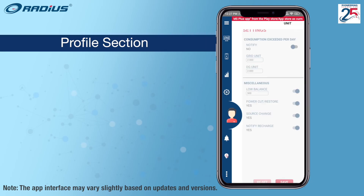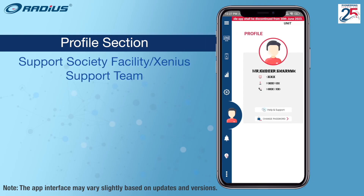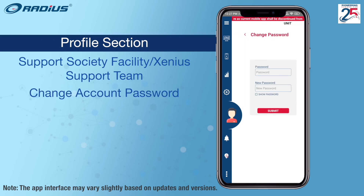In the profile section, users can access their account details, contact the society facility and Xenius support team, and change their password.